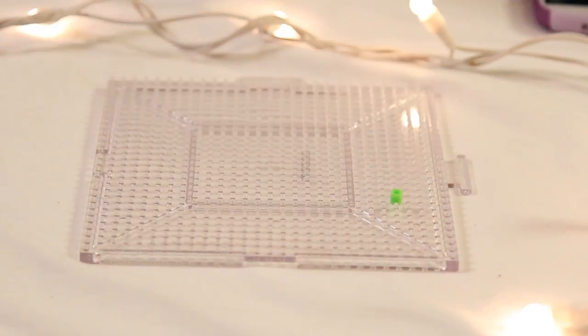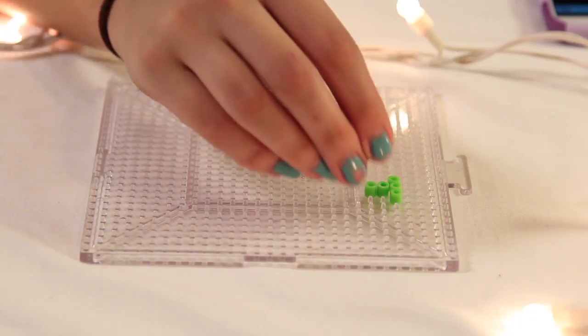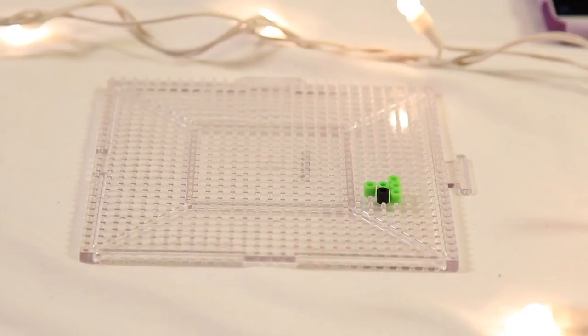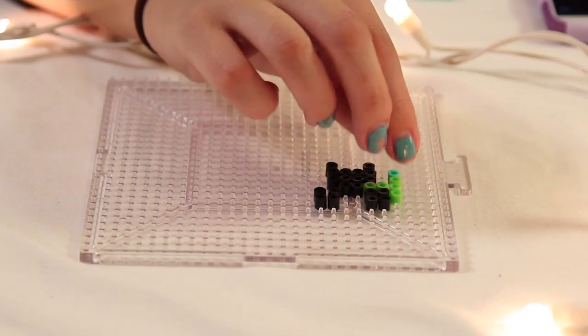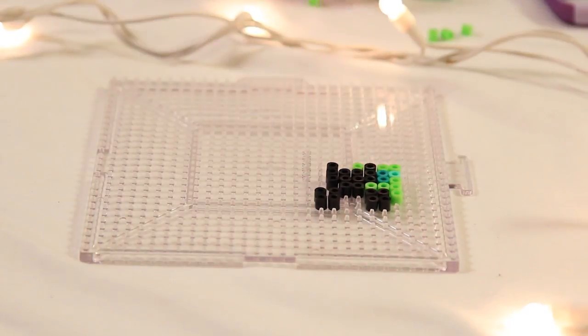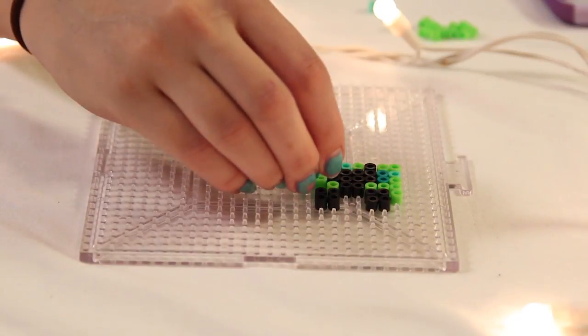So start off with an empty pegboard, and I'm gonna start off with the creeper first. It'll be easier if you start off with the eyes first and make the face, and then work around and make the green all around the edges.